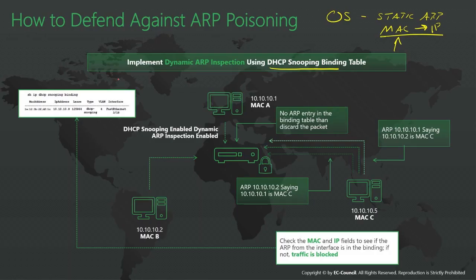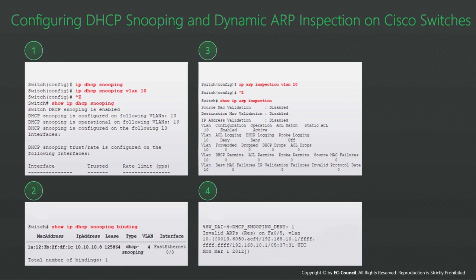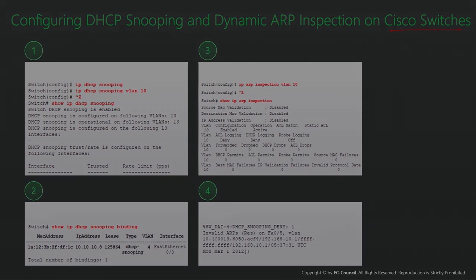All they're showing you here in this slide is a 'show ip dhcp snooping binding' command, which is a MAC address to IP address mapping. You've got the length of the lease, how it was obtained, the VLAN, and the associated port number. EC Council always uses Cisco for their examples. Cisco switches — both IOS and Nexus — have supported this for many, many years, so you're going to find good support. But even if you use non-Cisco gear, there's a good chance it'll support it as well.